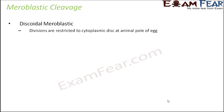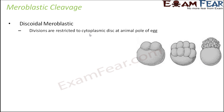Now let's move on to meroblastic cleavage, where complete cleavage does not take place — it is incomplete or partial cleavage. This is also of two types. One is discoidal meroblastic, where the cleavage is restricted to a disc-like structure at the animal pole of the egg — that is why it is named discoidal. All the cleavage happens only towards the upper end in a disc-like area.